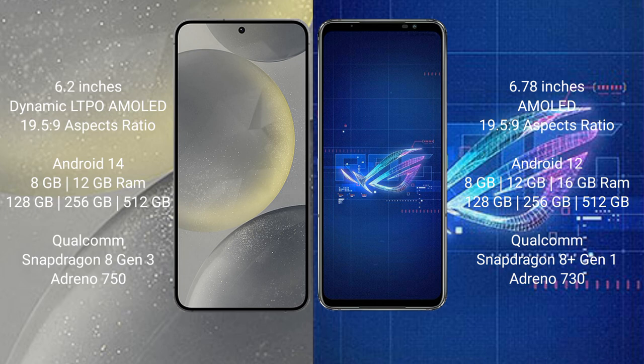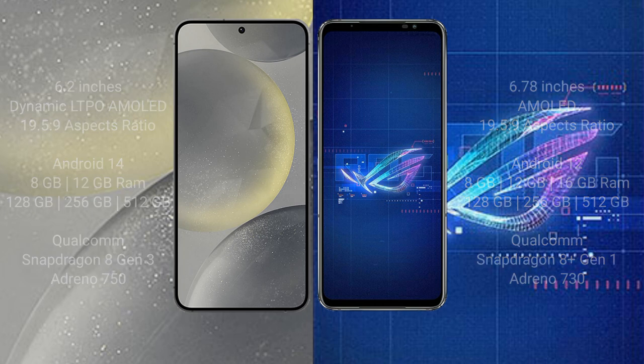The Samsung Galaxy S24 comes with 8GB to 12GB RAM and 128GB, 256GB, or 512GB internal storage, with a Snapdragon 8 Gen 1 processor and GPU Adreno 750. The ASUS ROG Phone 6 comes with 8GB to 16GB RAM and 128GB, 256GB, or 512GB internal storage, with a Snapdragon 8 Gen 1 processor and GPU Adreno 730.